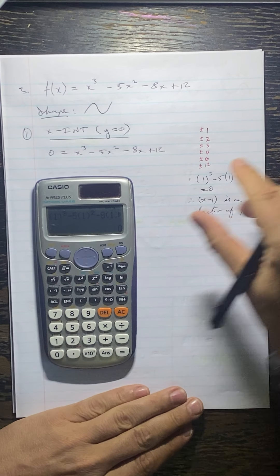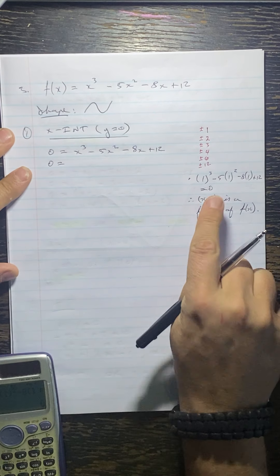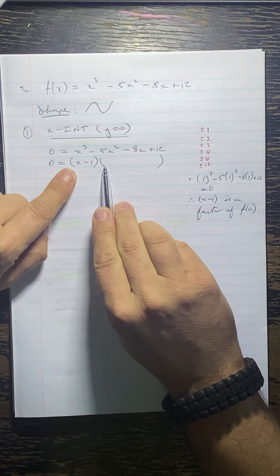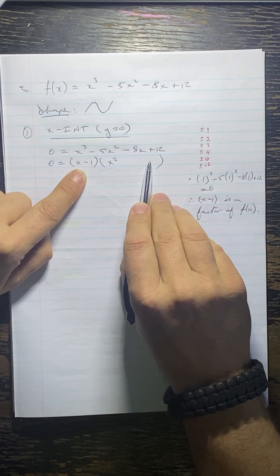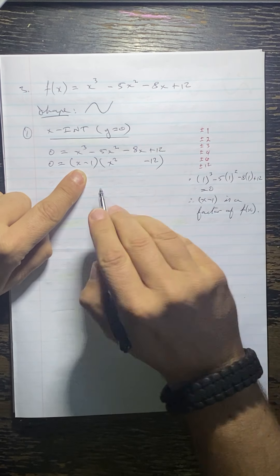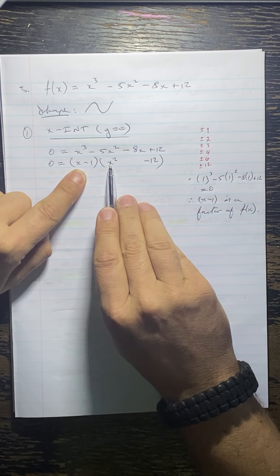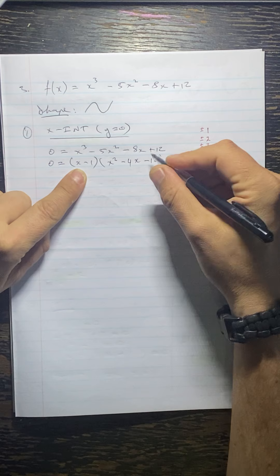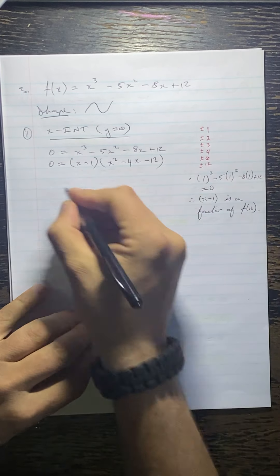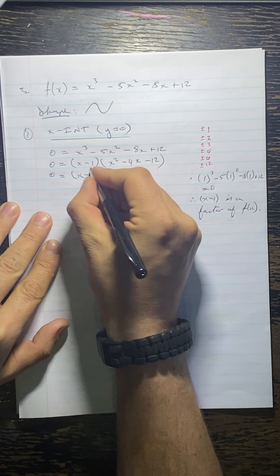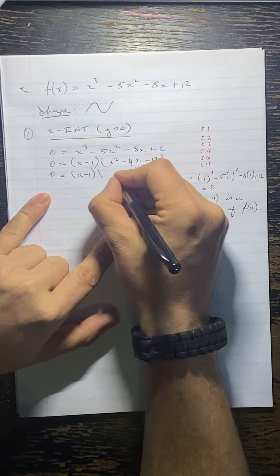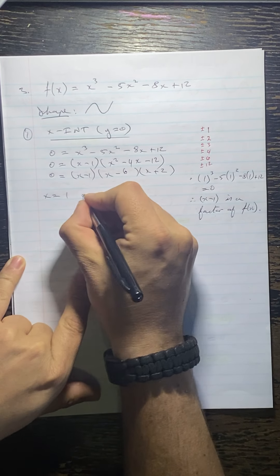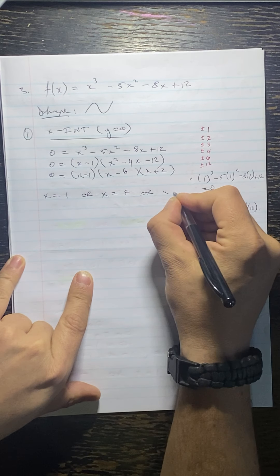Now I can go into factorizing. I know my first factor is x minus 1. Using my method: x times what gives x cubed? It's x squared. Minus 1 times what gives plus 12? It's minus 12. Then this times this gives minus x squared; how many x squareds in the original? Minus 5. So it's minus 4x squared, decreased by 1. We have a trinomial which we can factorize. We get x minus 1, x minus 6, x plus 2. So x equals 1 or x equals 6 or x equals minus 2 — those are our x-intercepts.